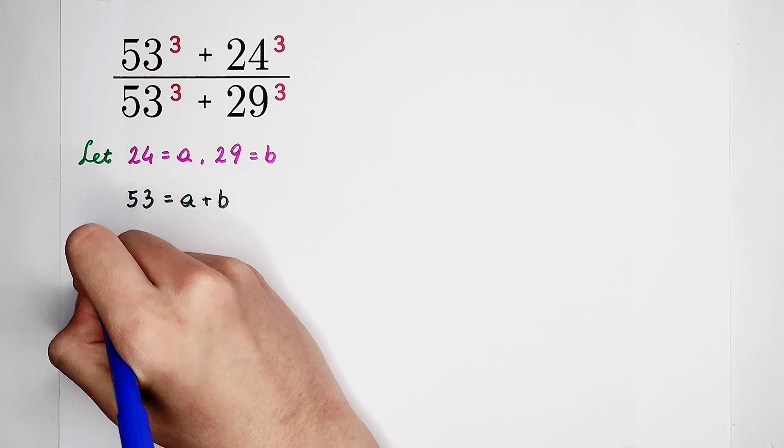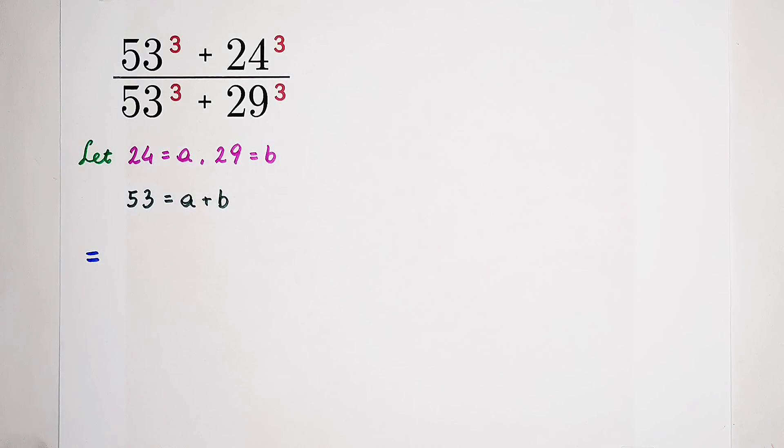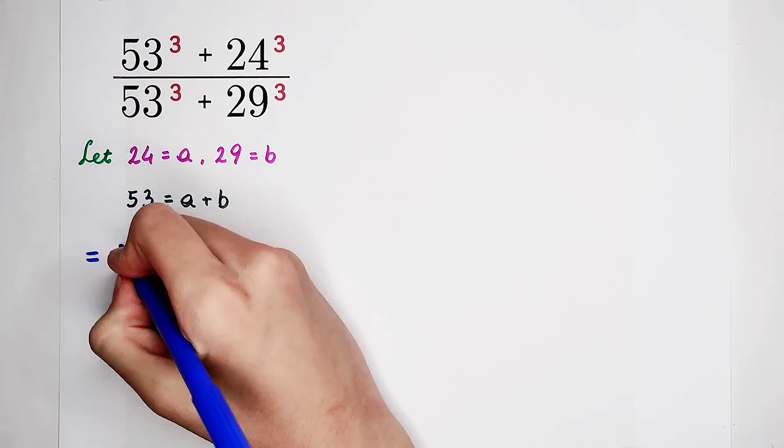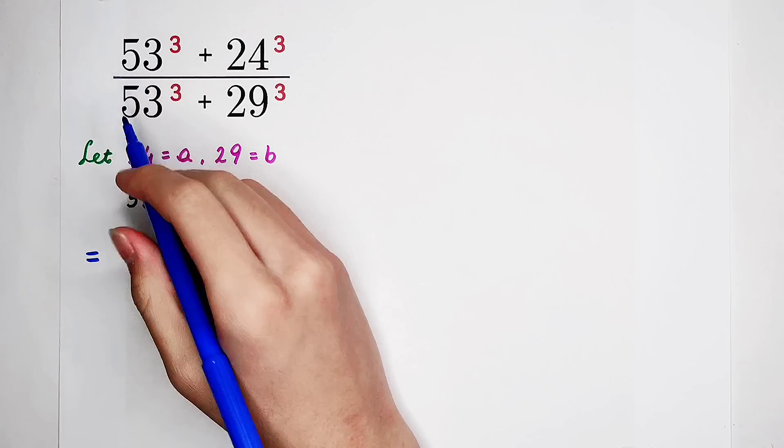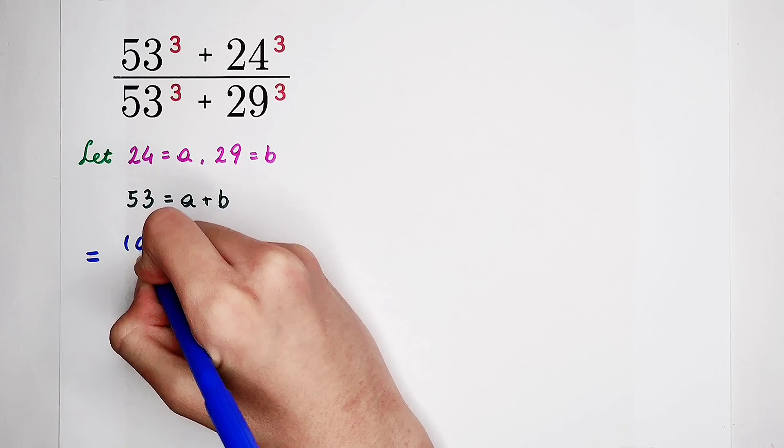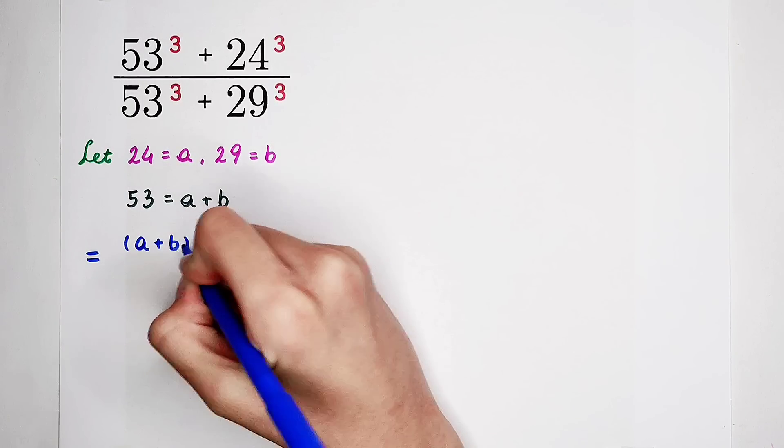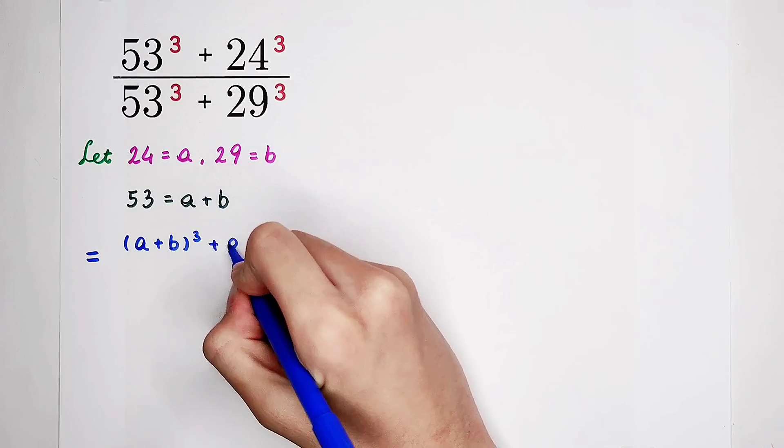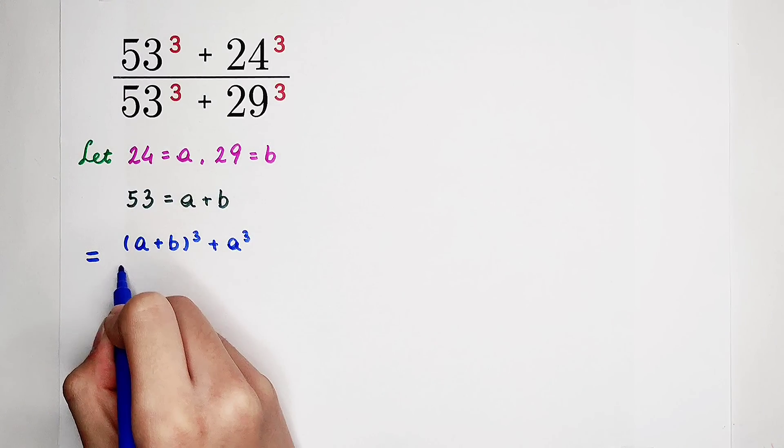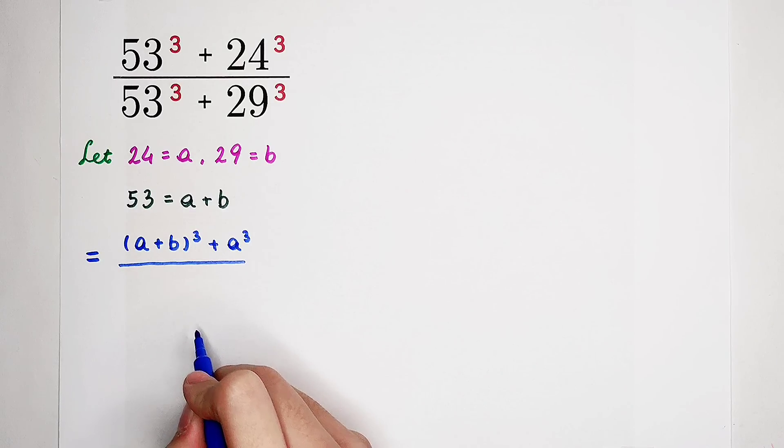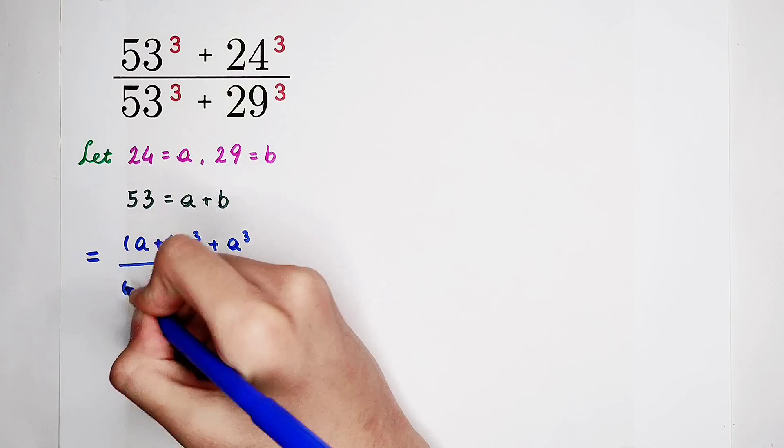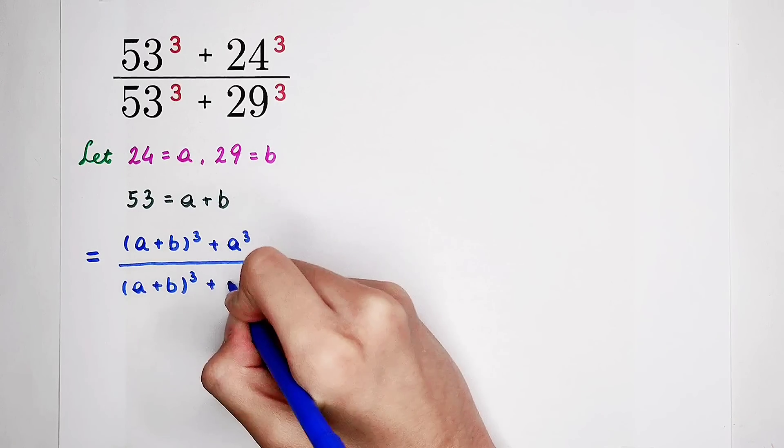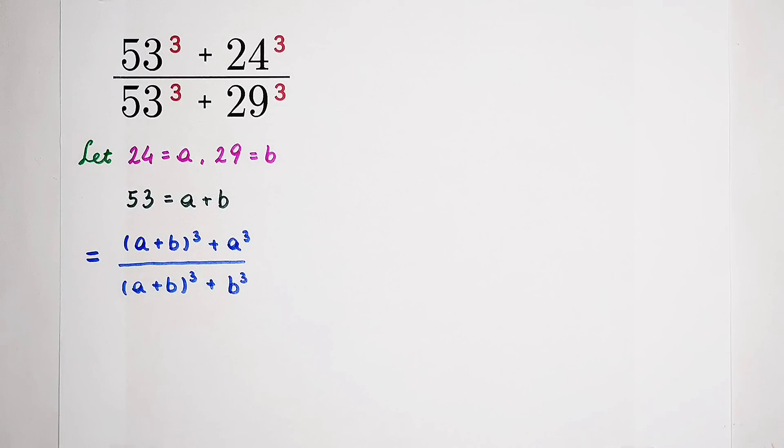First of all, our fraction turns into a term, or into a fraction, about a and b. 53 all cubed, it is a plus b all cubed, plus 24 is a, so it is a cubed. And then, fraction line. A plus b all cubed, then plus b cubed. Since b is 29.